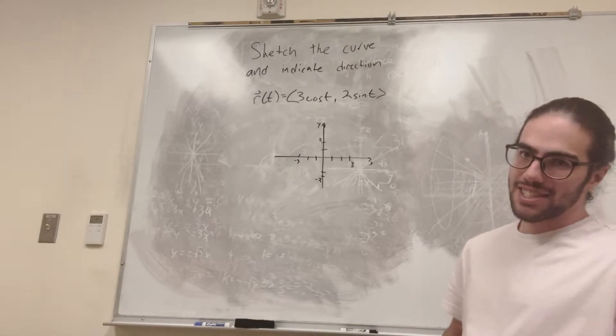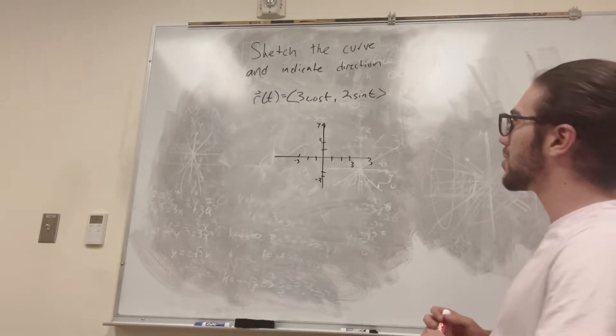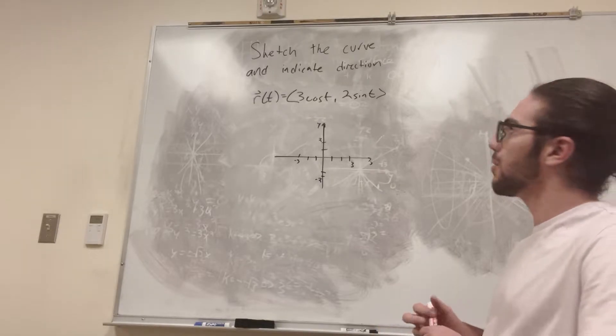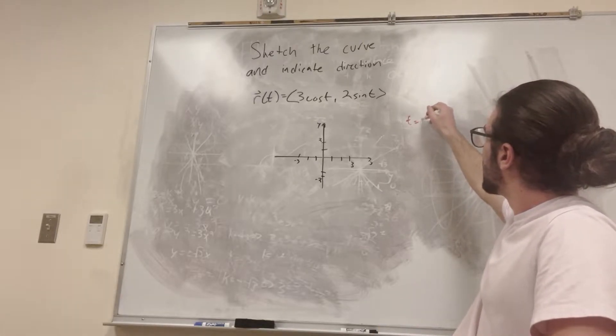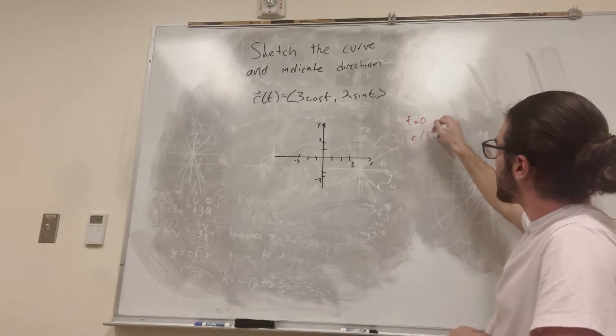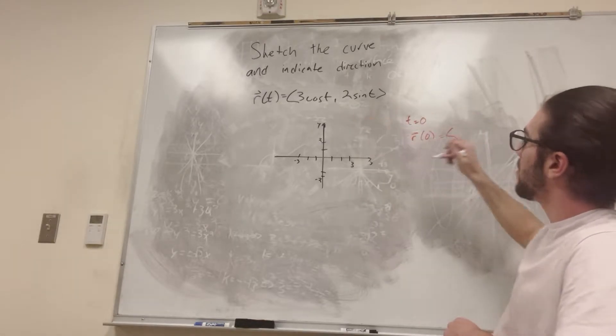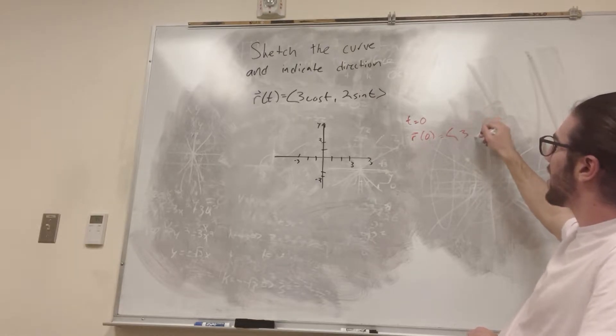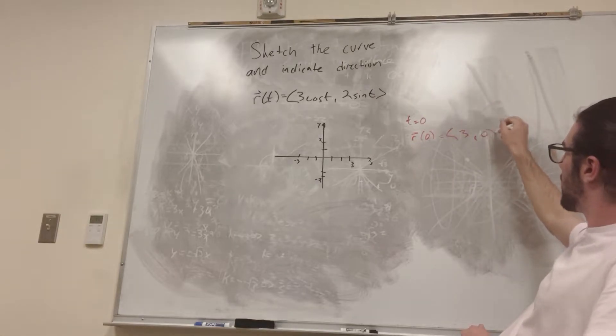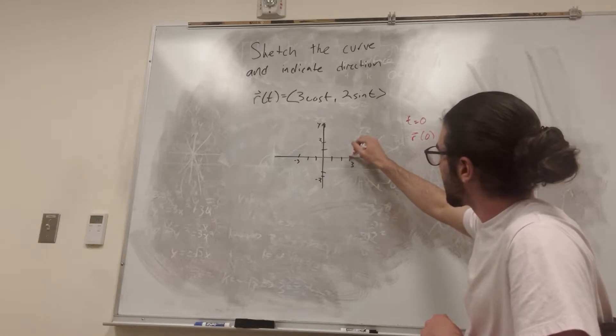So always when you have cosine and sine, let's start with 0. When we have t is equal to 0, so basically that means that R of 0 is what we're solving. It's going to be equal to 3 cosine of 0, which is 1, so it's going to be 3. Then 2 sine of 0 is equal to 0. So let's plot that. This is t is equal to 0.